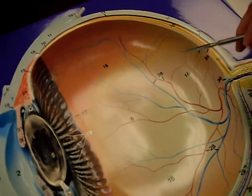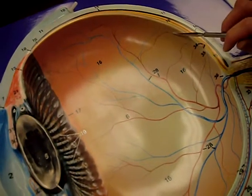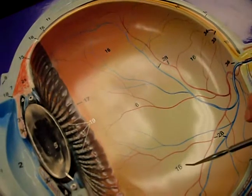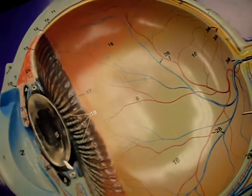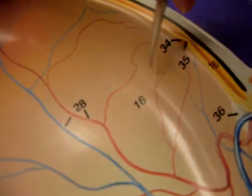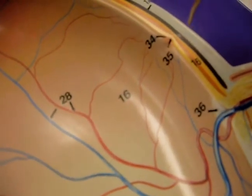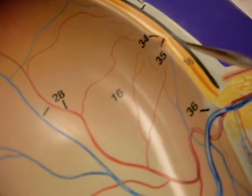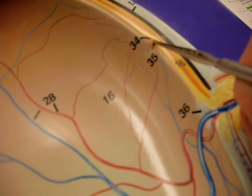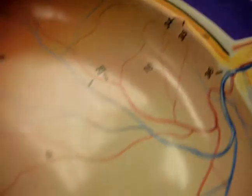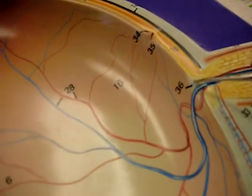Then the retina, or the sensory tunic, is the innermost layer. It covers the entire inner portion of the eye. It has the macula lutea, which is this area right here. In the center of the macula lutea is the fovea centralis, which is the area of sharpest vision.